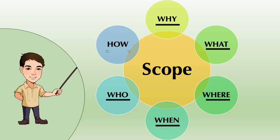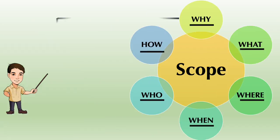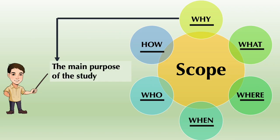The first W is why. Why refers to the main purpose of the study. You need to reflect in your research paper, in the scope section, what is the general aim or objective of your research study.